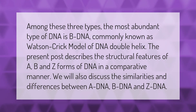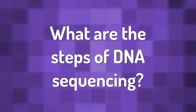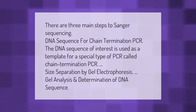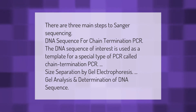There are three main steps to Sanger sequencing. First, chain termination PCR: the DNA sequence of interest is used as a template for a special type of PCR called chain termination PCR. Second, size separation by gel electrophoresis. Third, gel analysis and determination of the DNA sequence.